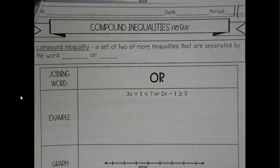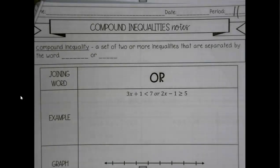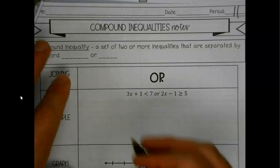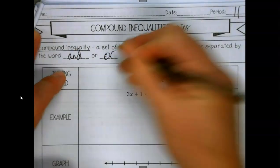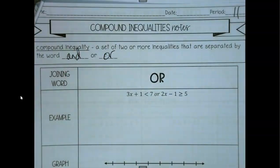Today we wrap up inequalities with our third in our series: the compound inequality, which means there are going to be multiple pieces — not necessarily just two, as we might run into a few with three. When we deal with a compound inequality we have two or more inequalities that are separated by the word 'and' or 'or'.